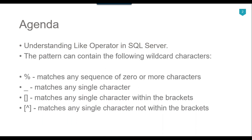The pattern can contain the following wildcard characters. The first one is the percentage sign, which matches any sequence of zero or more characters in a string. The second one is the underscore, which matches any single character. The third one is two brackets, which matches any single character within the brackets. The fourth one is two brackets with a caret sign, which matches any single character not within the brackets.